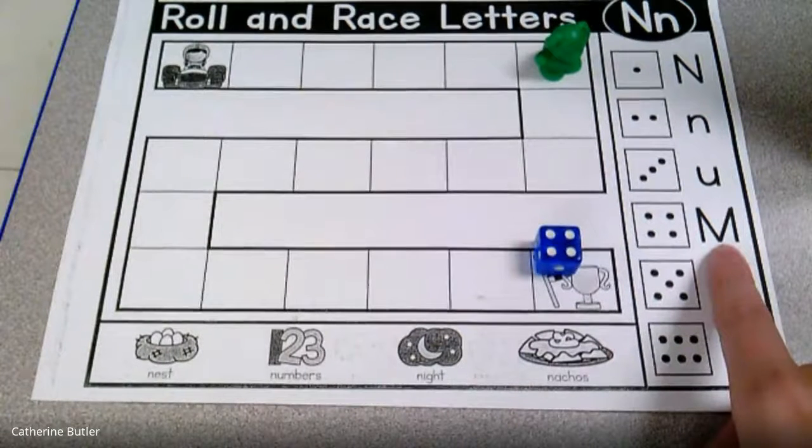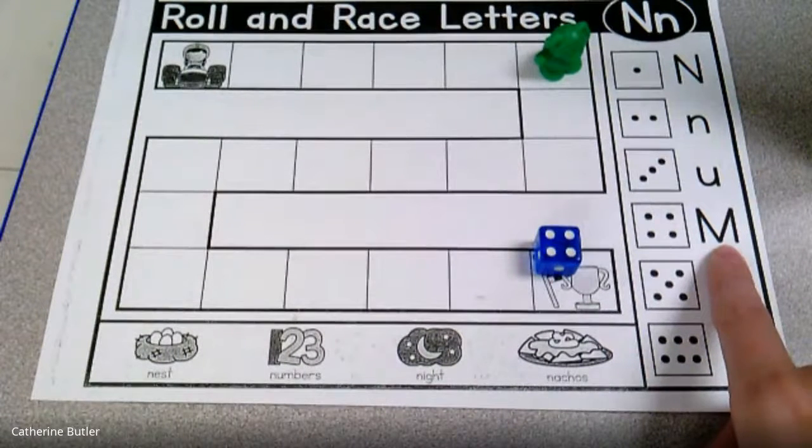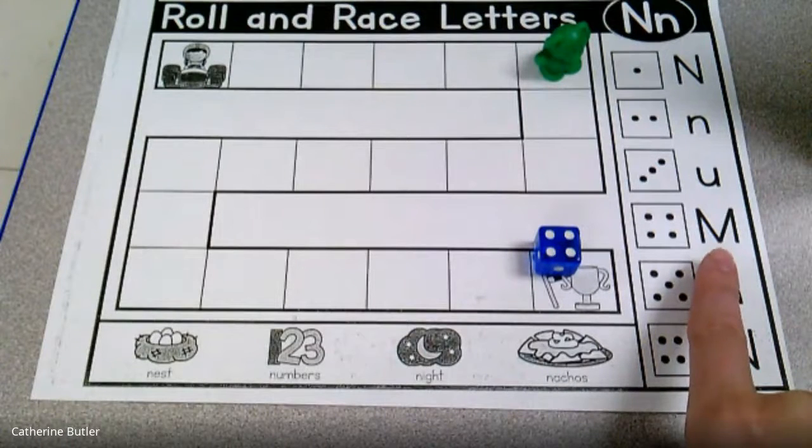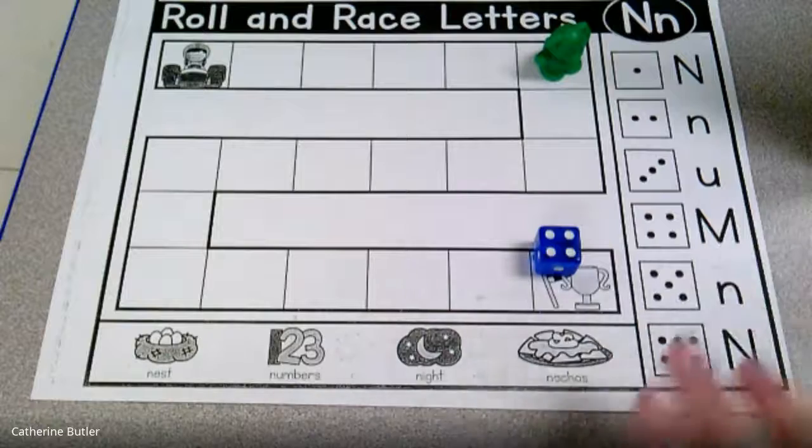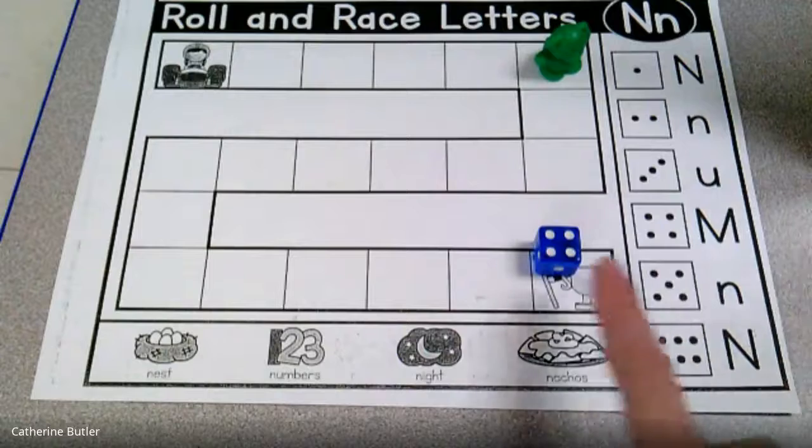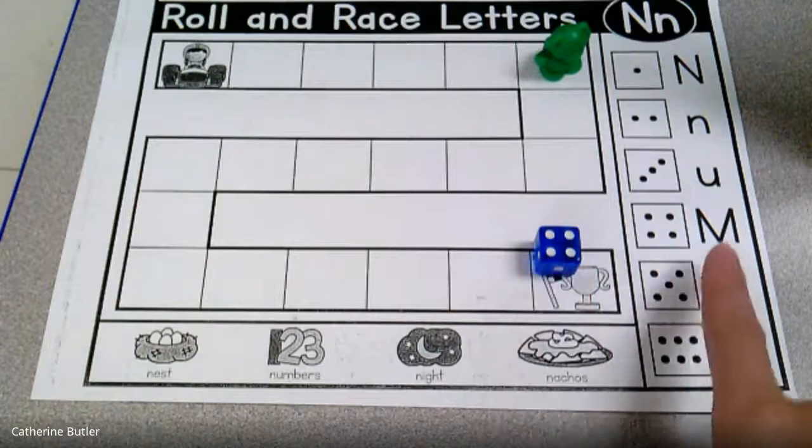Let's see. Is that the letter N? No, it's not. That's the letter M. So guess what, guys? I can't move. I'm gonna skip my turn. If I do not roll that letter N, I can't move. I'm frozen.